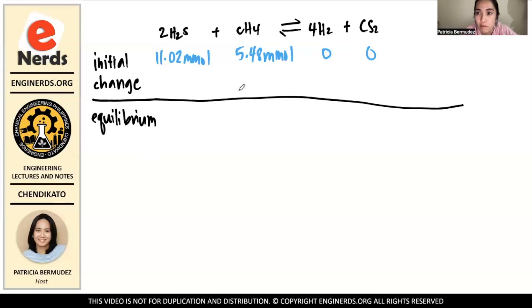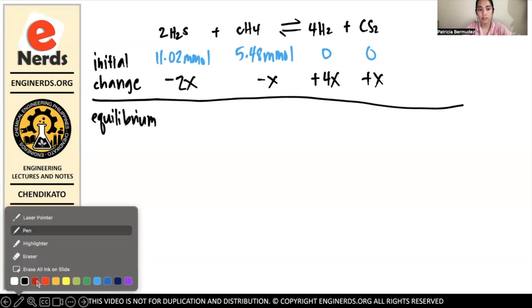So yung change naman natin, this is where the coefficients will take importance. Dahil andoon siya, lalagyan na lang natin siya ng x. So for every mole of compound that changed or reacted, it is directly proportional to the stoichiometric ratio. So your reactants will react to make products, so mamabawasan siya. So this is negative x. But for every methane, there is two hydrogen sulfide that reacts, so dapat negative 2x to. Ito naman, dahil siya yung product, siya yung mapiproduce, siya yung matadagdagan. So yung x here will be plus, and then multiply by the coefficient, it will be 4x. At dito, wala naman siyang coefficient, so it will just be plus x.